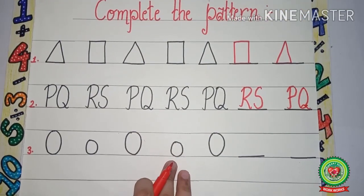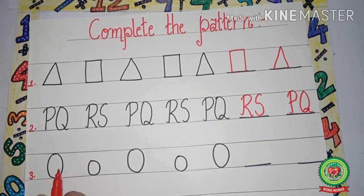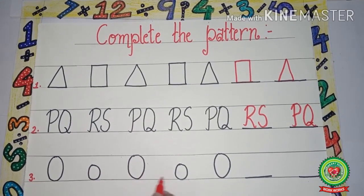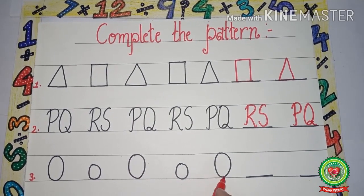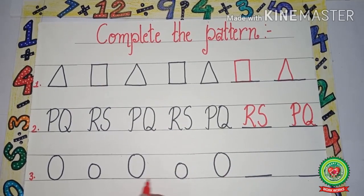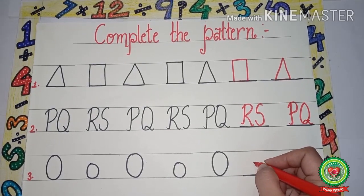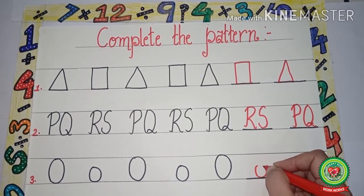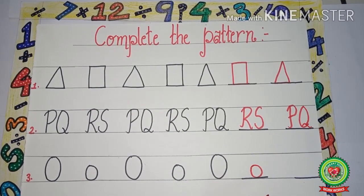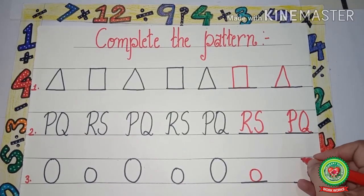Next is a big circle, a small circle, a big circle, a small circle, a big circle. Now what comes after a big circle — a small circle — so we will draw a small circle here. Now again after a small circle what comes — a big circle — so we will draw a big circle here.